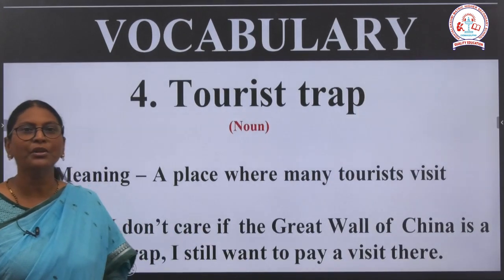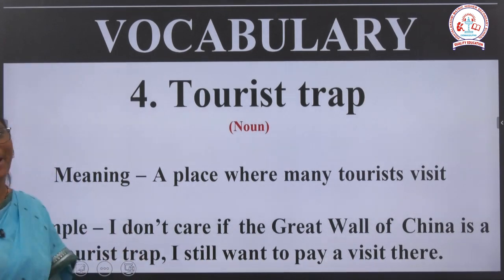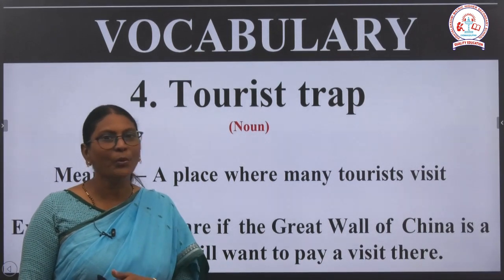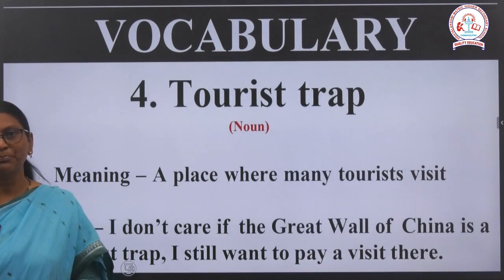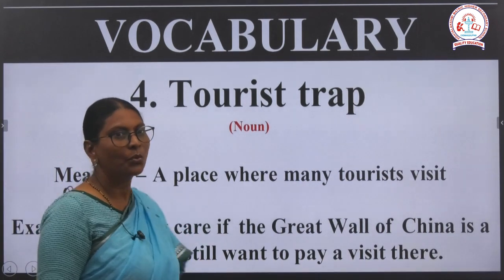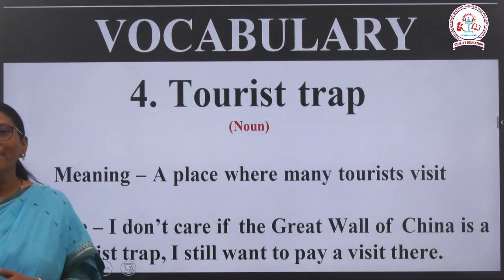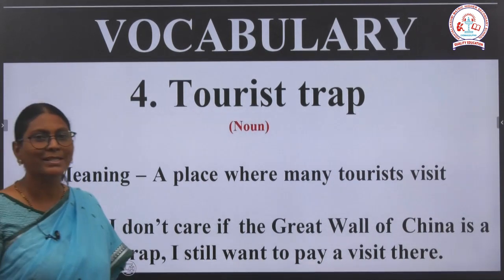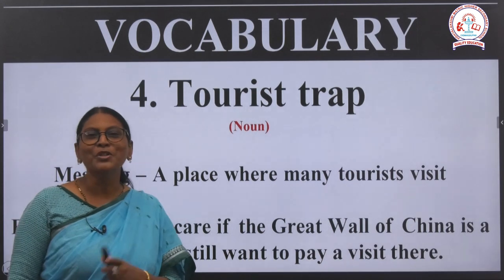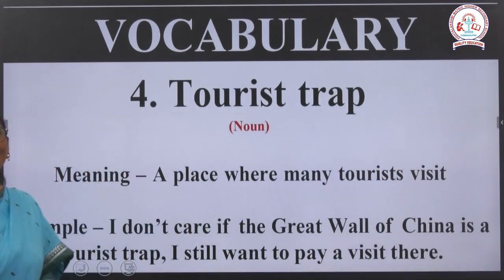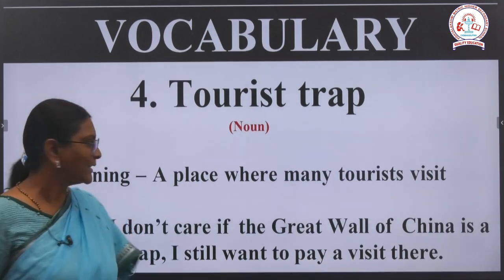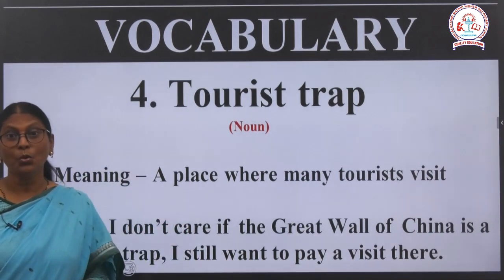The fourth vocabulary word is tourist trap, which is a noun. The meaning is a place where many tourists visit. The example sentence is: 'I don't care if the Great Wall of China is a tourist trap — I still want to pay a visit there.' It's a wonderful sentence that shows how much you long for traveling.